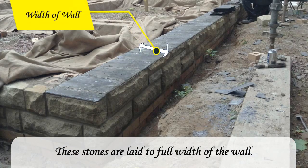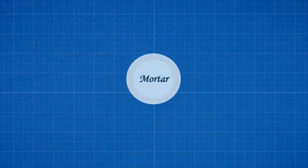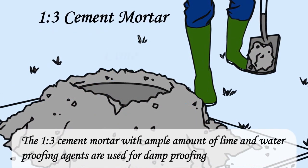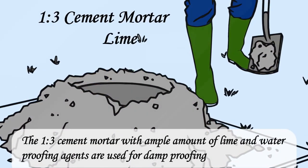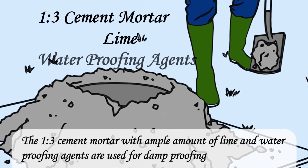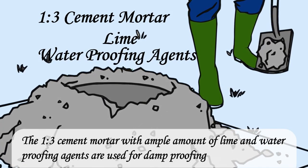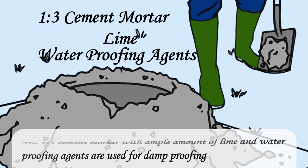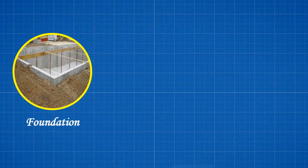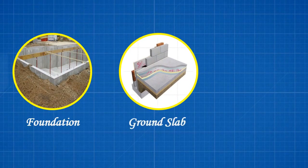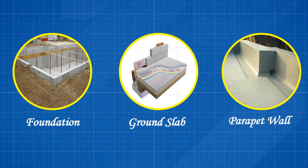Stones used for damp proofing are laid to the full width of the wall. Mortar — a 1:3 cement mortar with an ample amount of lime and waterproofing agents — is used for damp proofing. It is generally laid to suitable thickness in foundations, ground slabs, and tops of parapet walls.